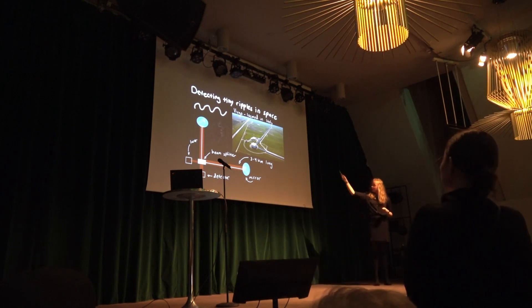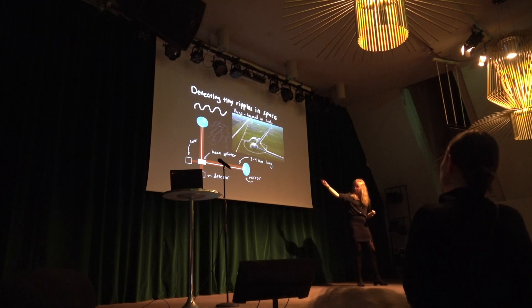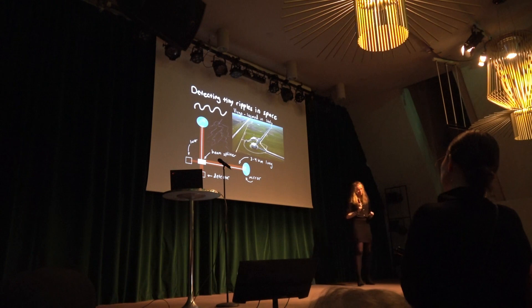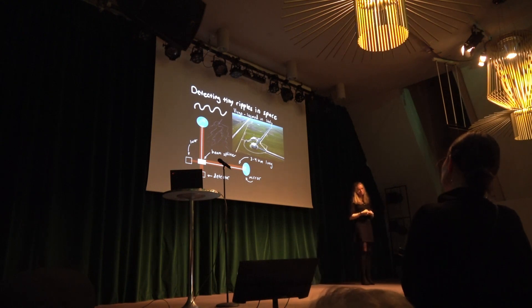The arms — also the distance from the beam splitter to a mirror — is roughly three kilometres for Virgo, for example. So it's quite large, a long thing.